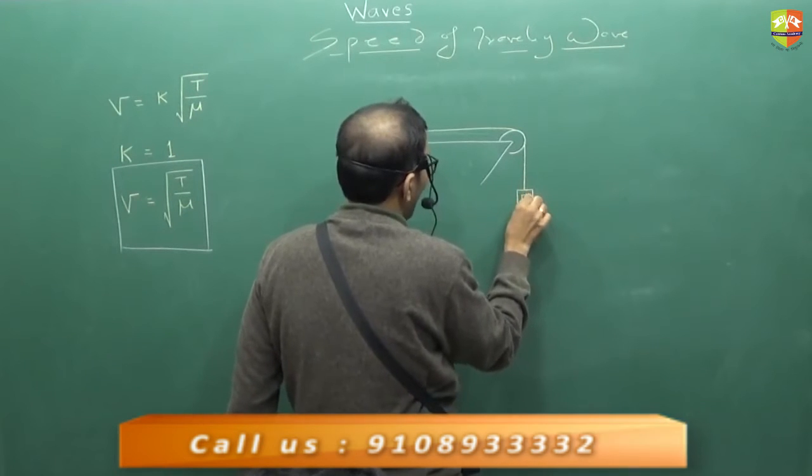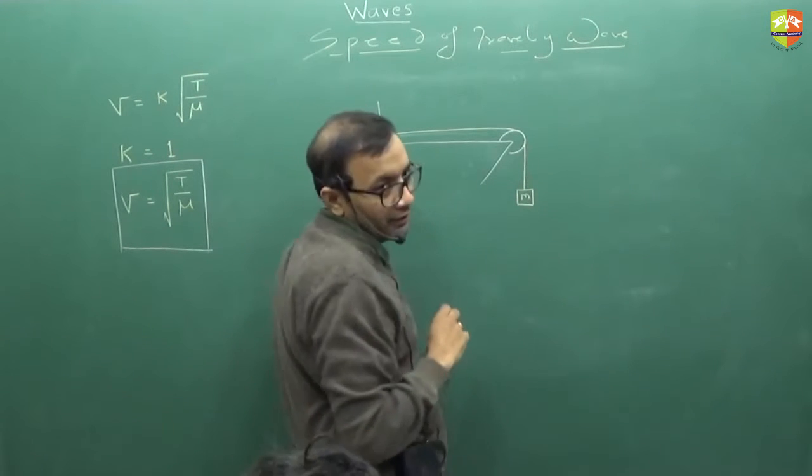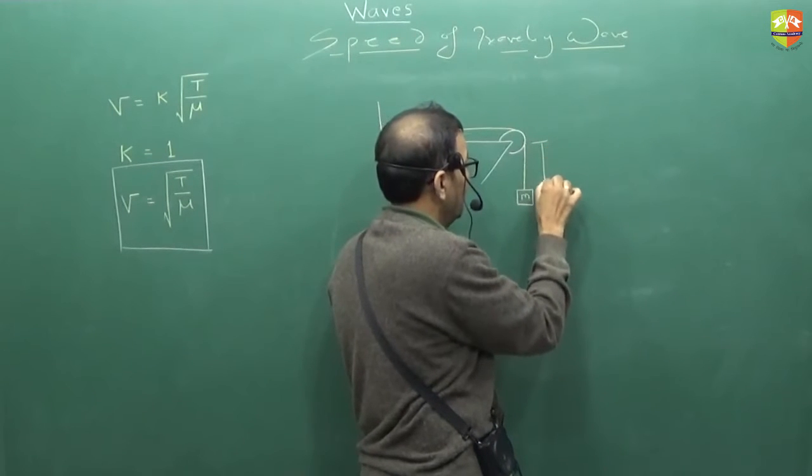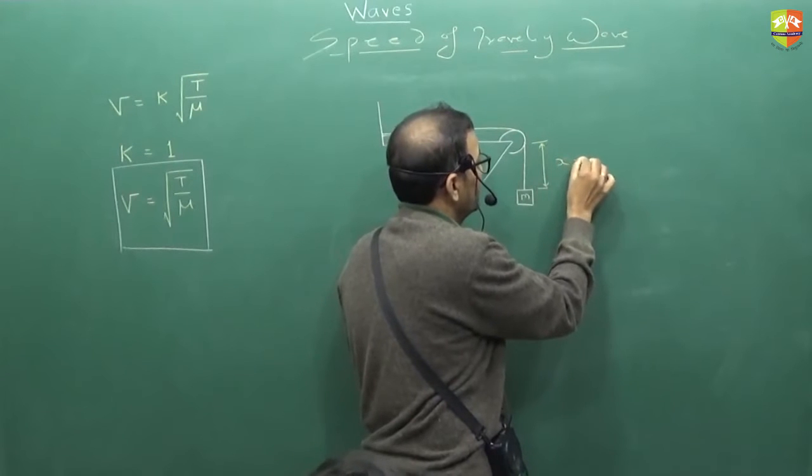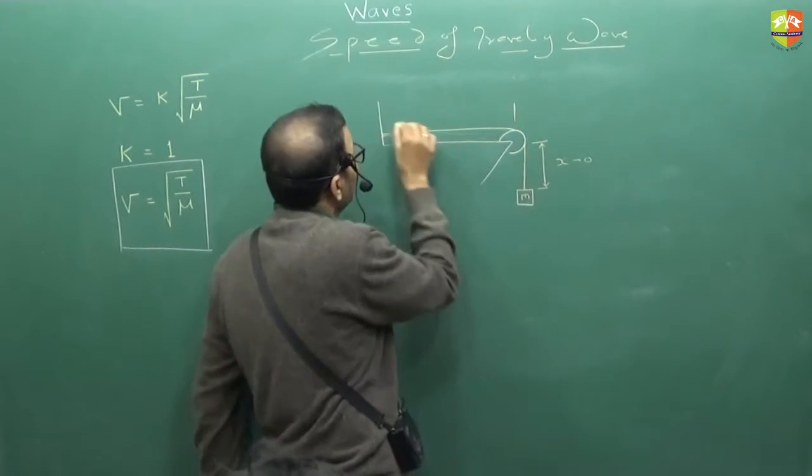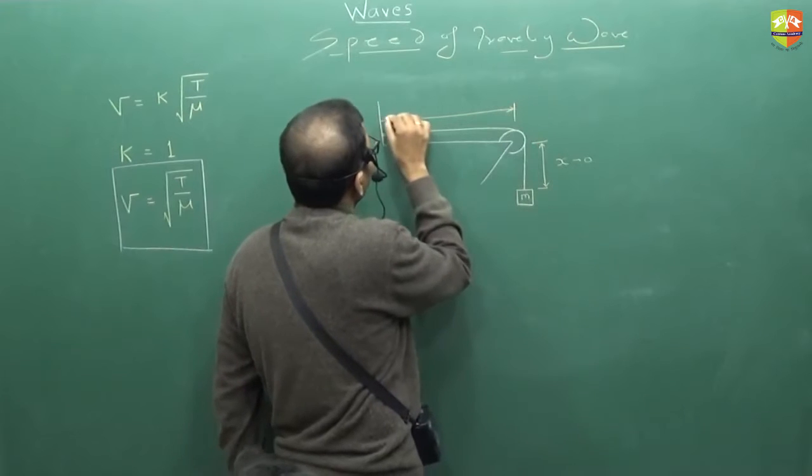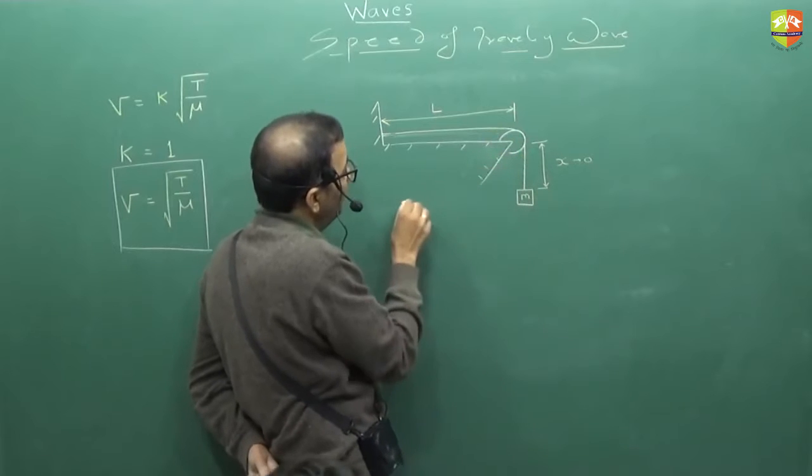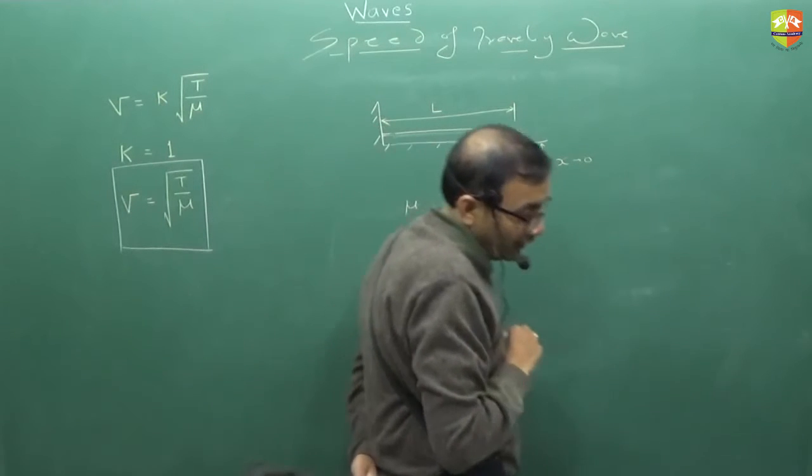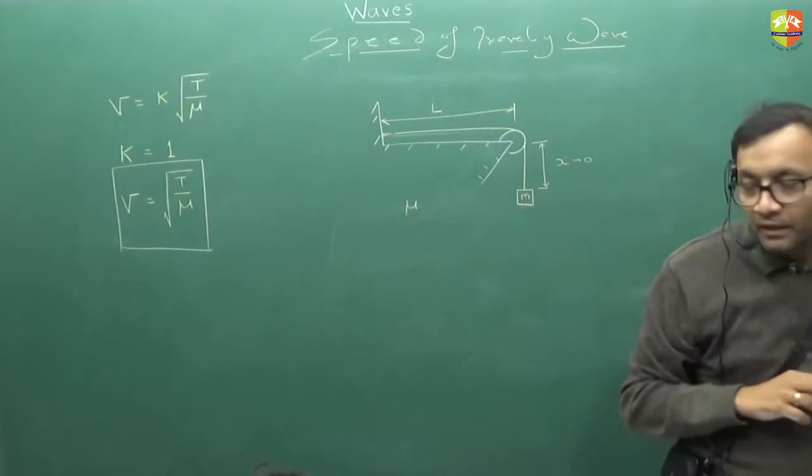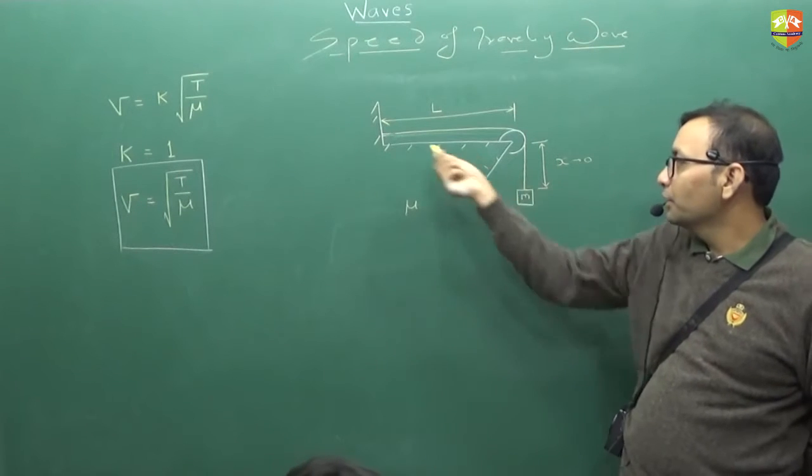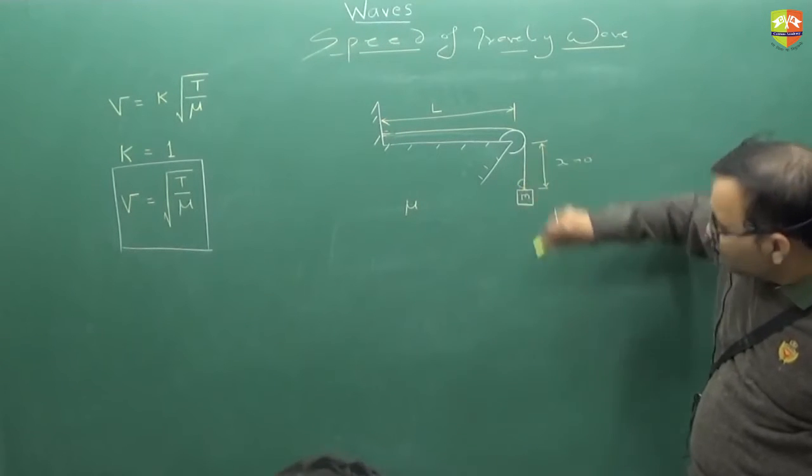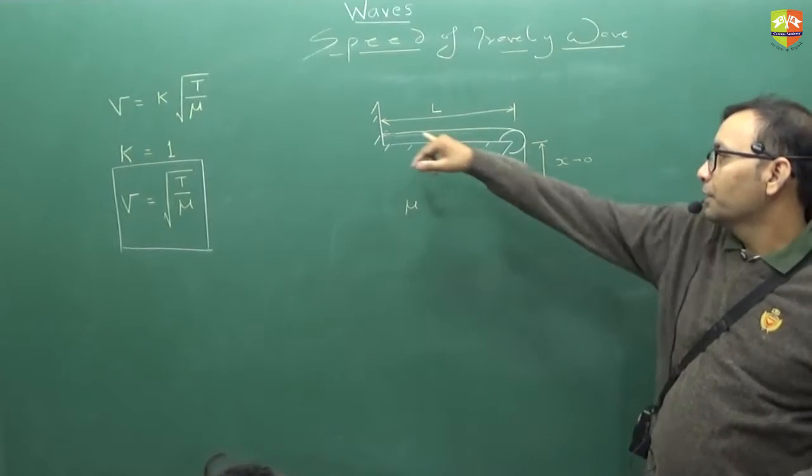There is a mass m kept over here. Now this length is very small, x tends to 0. From here to here, this length is l. Mass per unit length is mu. Find out how much time it will take for a disturbance to travel from here to here. You have created a disturbance here, how much time will the disturbance take to go from here to here?